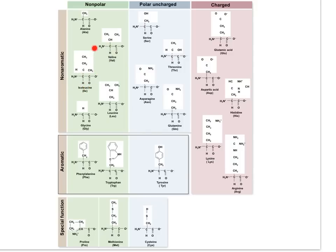So they all have this amino group, and they all have the acid group. So you can see that that remains constant, and what gives them the identity is the R group, which is here highlighted in the white boxes. So every amino acid has a different R group, but they all have exactly the same amino and acid group.